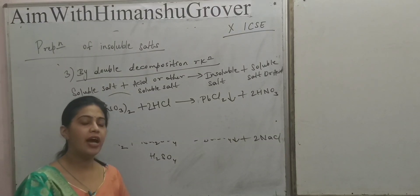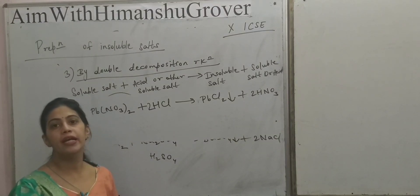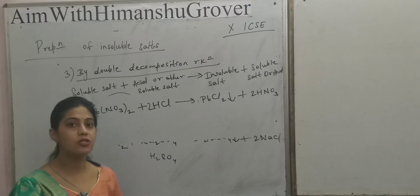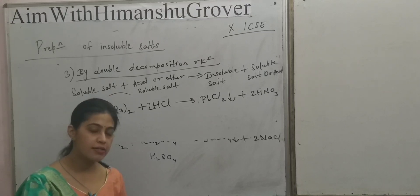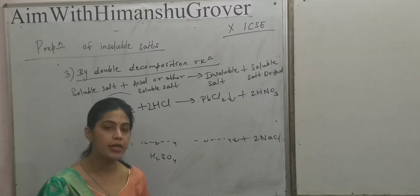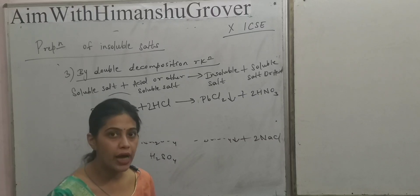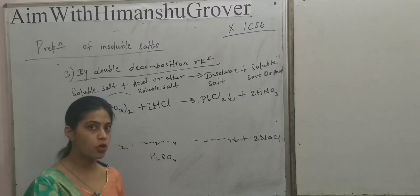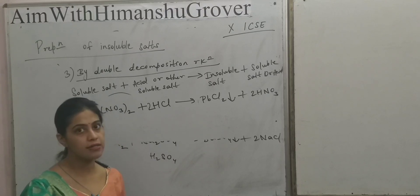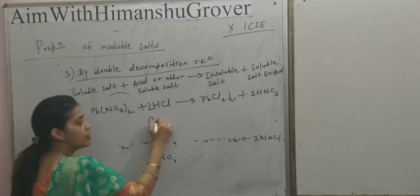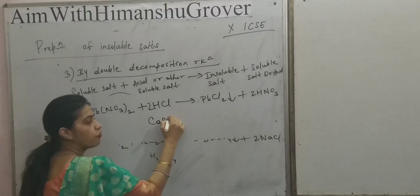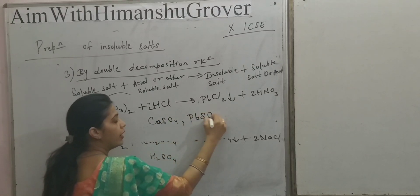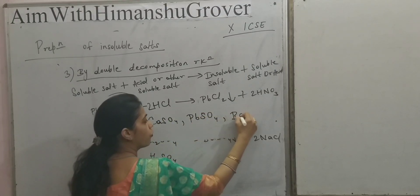Suppose we have to prepare lead sulphate, PbSO4, which is an insoluble salt. If you remember, all sulphates are soluble except three metallic sulphates: CaSO4, PbSO4, and BaSO4.